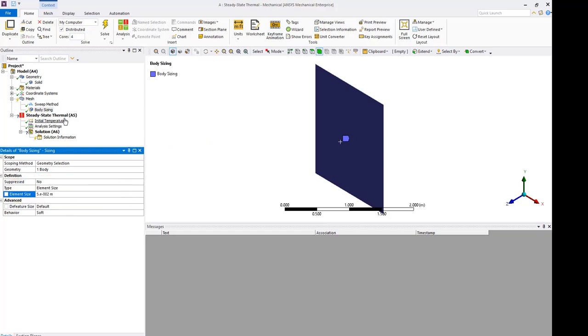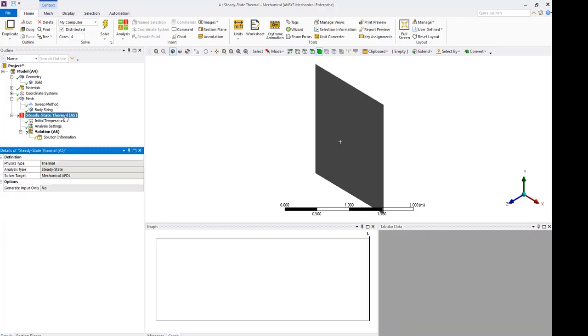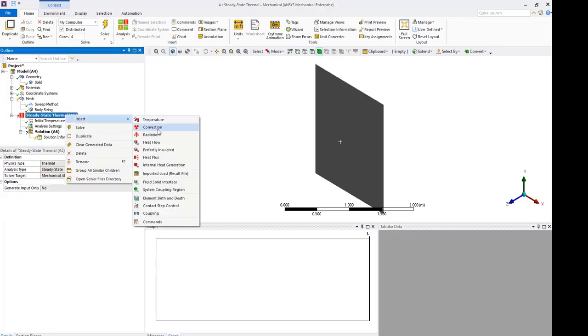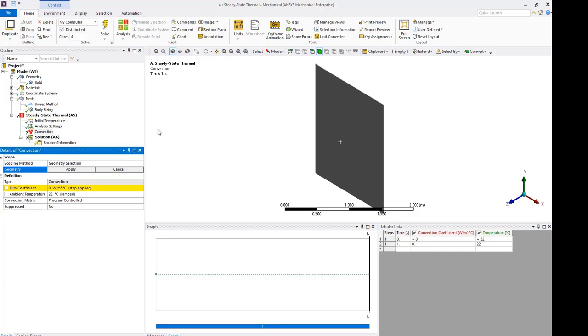Next, apply convection boundary condition on one side of the glass with ambient temperature of 22 degrees Celsius and a film coefficient of 5 watts per meter square in degrees Celsius.